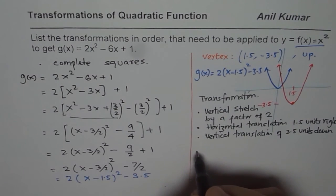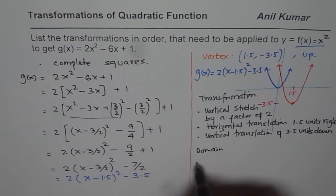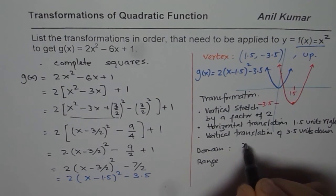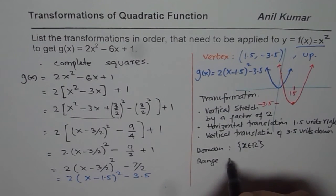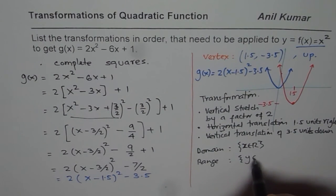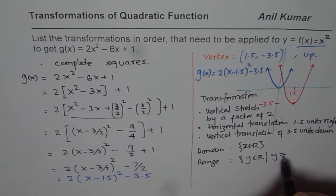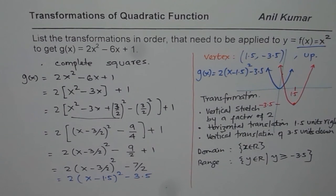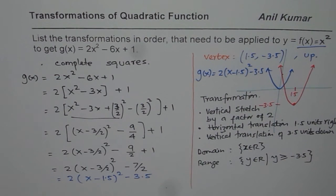As part of your exercise, you can write domain and range for the function. Domain for parabolas is always x belongs to real numbers. There is no restriction. As far as range is concerned for this particular function, we know y is greater than or equal to the minimum value of minus 3.5 since it opens upwards. That gives you a good idea of how to really explain the transformation and also how to sketch it. We will see sketching of these parabolas in few videos. Thank you and all the best.